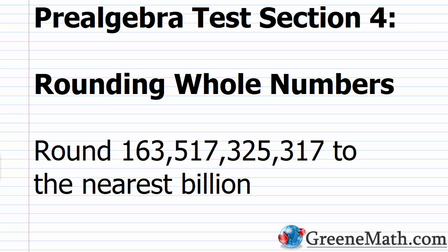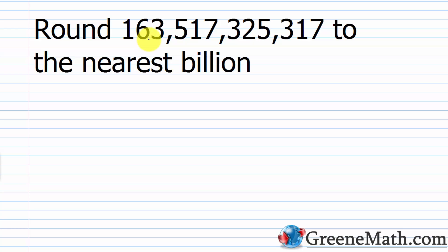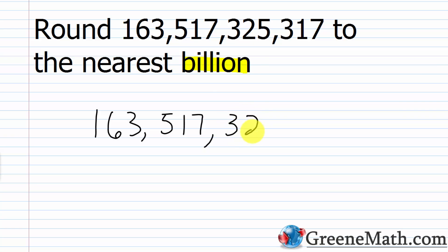Hello and welcome to Pre-Algebra Test Section 4 on Rounding Whole Numbers. For the first problem today, we'd like to round 163,517,325,317 to the nearest billion. Let's just rewrite this number: 163,517,325,317.